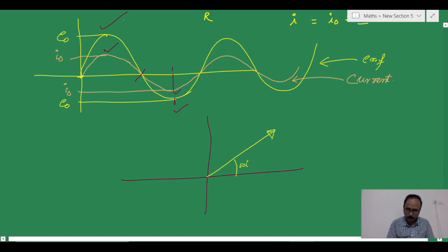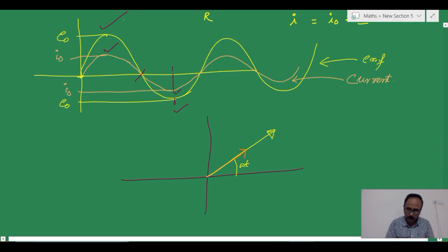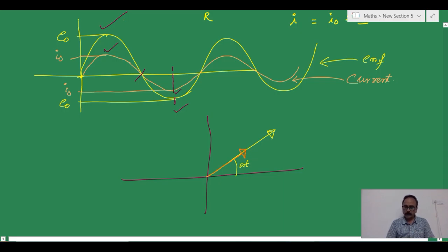This can also be represented using phasor diagrams. Phasors are nothing but rotational vectors. This is AC voltage phasor. This is the current phasor. So, here this is I not and this is E not.